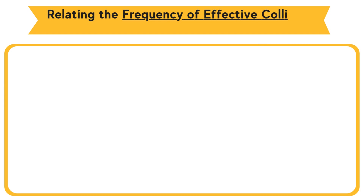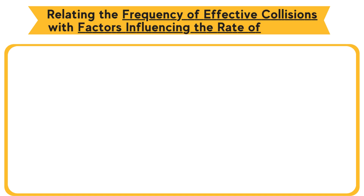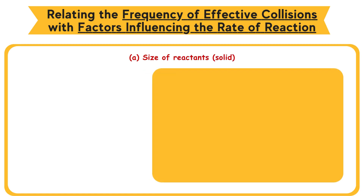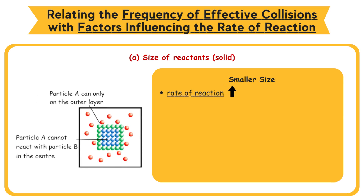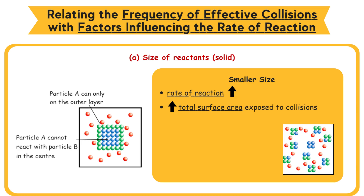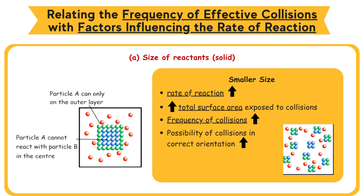a. Size of reactants (solid): A decrease in size of solid reactant causes an increase in rate of reaction. Particle B can only collide with particle A found on the outer layer, but not the particles in the center of the lump. When solid reactant A is crushed into smaller size, more particle A becomes exposed to collision. Solid reactant with smaller size has larger total surface area exposed to collisions. Frequency of collisions between reacting particles increases. Possibility of collisions in correct orientation increases. Hence, the frequency of effective collisions increases.